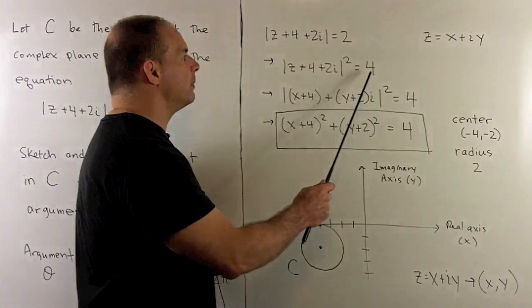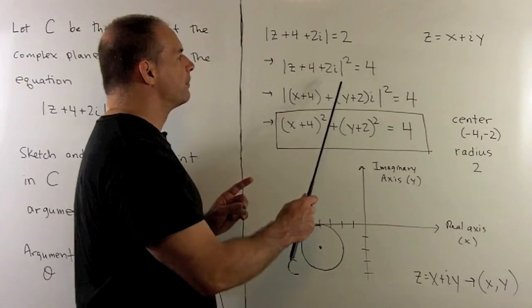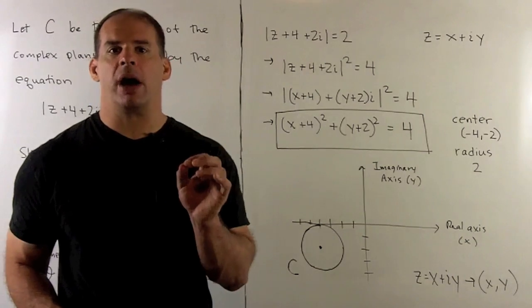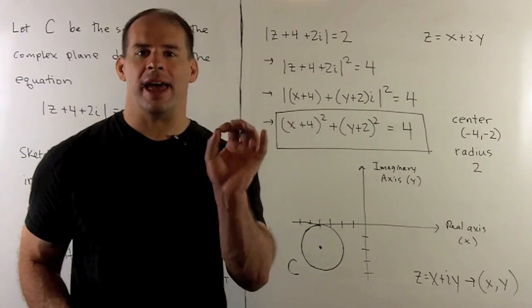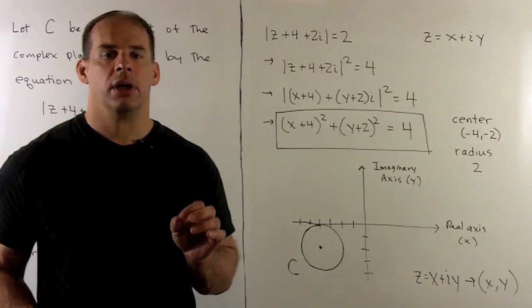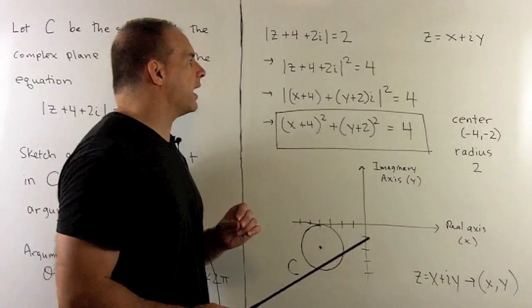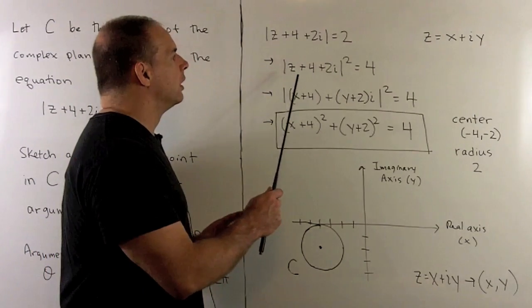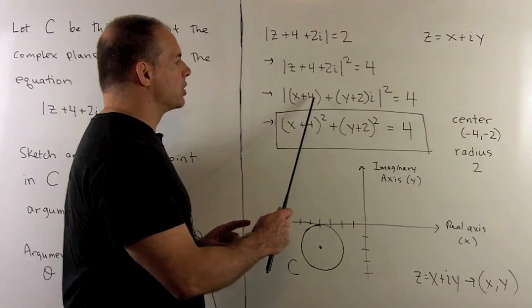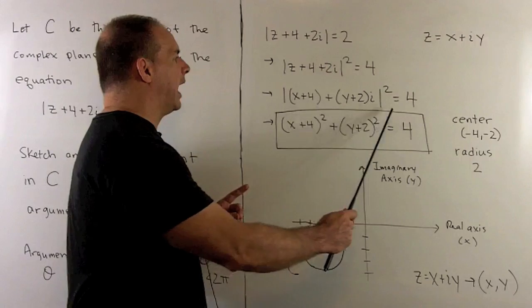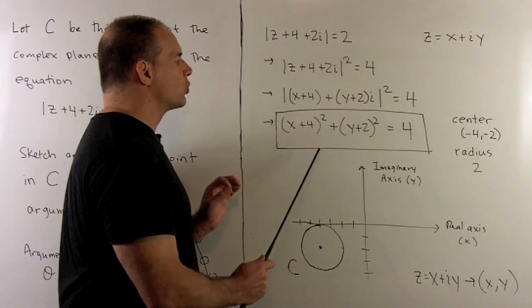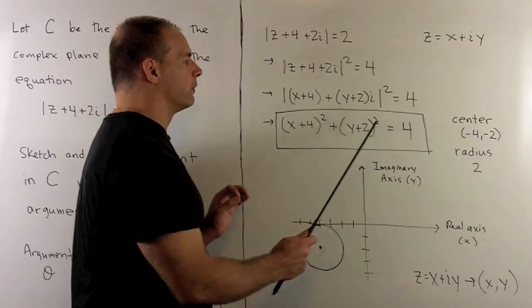We'll square both sides of our equation. Then, the recipe is to compute the modulus squared. We take the real and imaginary parts, square them, and then add. So, if I substitute x plus i y in for z, our real part is going to be x plus 4. Our imaginary part is y plus 2. So, what we get will be x plus 4 squared plus y plus 2 squared is equal to 4.